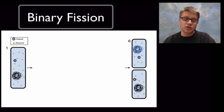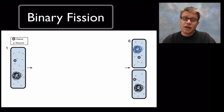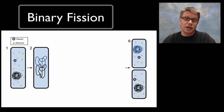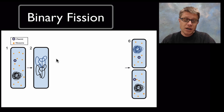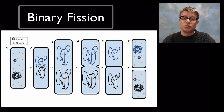Bacteria reproduce through binary fission. We start with a parent cell made up of ribosomes, a plasmid which is a little bit of extra DNA, and its genome — all of its DNA — wrapped up into one loop. The bacteria cell starts by duplicating all of its DNA: DNA polymerase goes around the whole loop and makes an exact copy. We also duplicate the plasmids and the ribosomes increase as well. What happens next is the DNA is pulled to the side and attaches to the cell wall, and eventually the cell wall splits in half, giving us two bacteria cells.